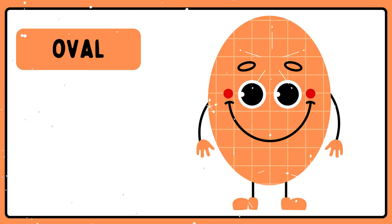This is an oval. Oval has no straight line or corner or side to it. It is a closed shape made of curved lines.